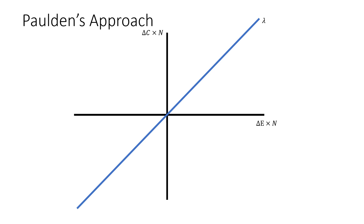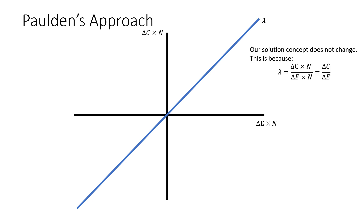Now think about this: what if we multiply our change in costs and our change in effects by N? The crucial thing here is that nothing changes with this, because our ICER — or threshold value lambda — is just our change in costs over our change in effects. If we multiply each of these by N, they cancel out and it stays the same. So your concept of the ICER stays the same if we multiply each of these changing costs and changes in effects by N.